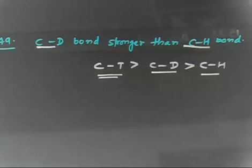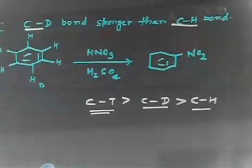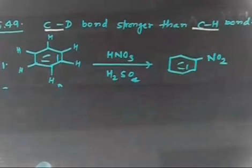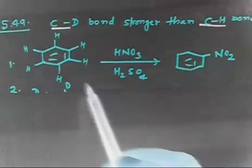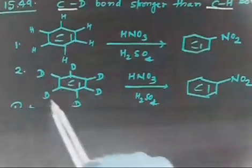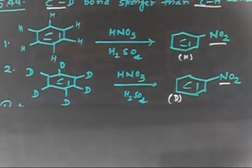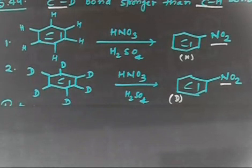Now, the problem is: if I do nitration of benzene that contains hydrogen at all positions, I get an NO2 group added. Similarly, I can do nitration of a benzene that contains deuterium at all positions. In both cases the NO2 group attaches, but in the first case the ring positions bear hydrogen, and in the second case they bear deuterium.